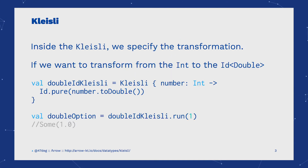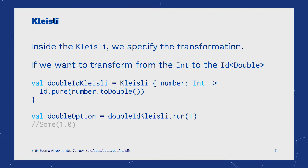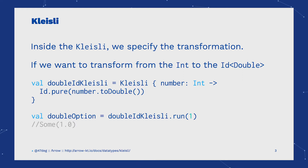Inside the Kleisli we specify the transformation. We can define a function from the input type to the monadic context with the output type. For example, a Kleisli of Id, Int, and Double contains a function which receives an Int as parameter and returns the Id of Double.